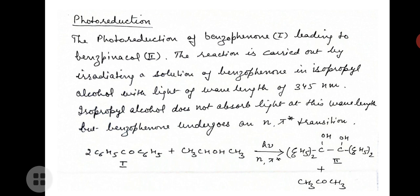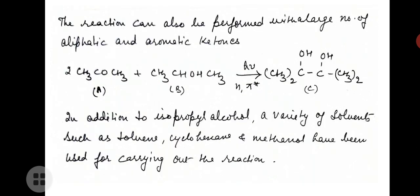Benzophenone undergoes an n→π* transition. The reaction shows benzophenone reacting with isopropyl alcohol in the presence of light, where the n→π* transition takes place in benzophenone. The reaction can also be performed with a large number of aliphatic and aromatic ketones.